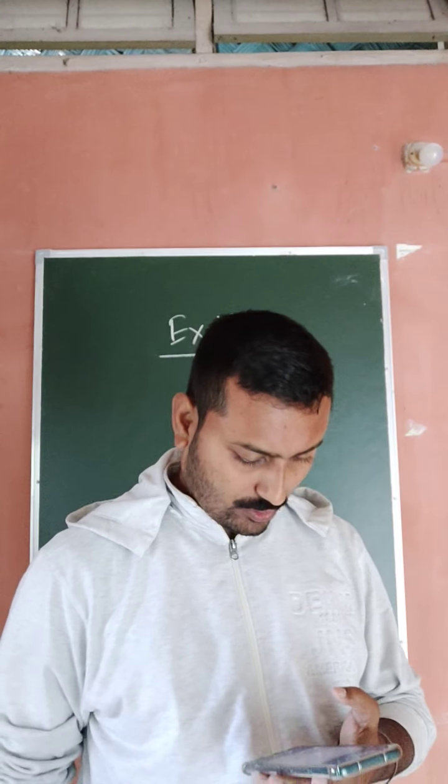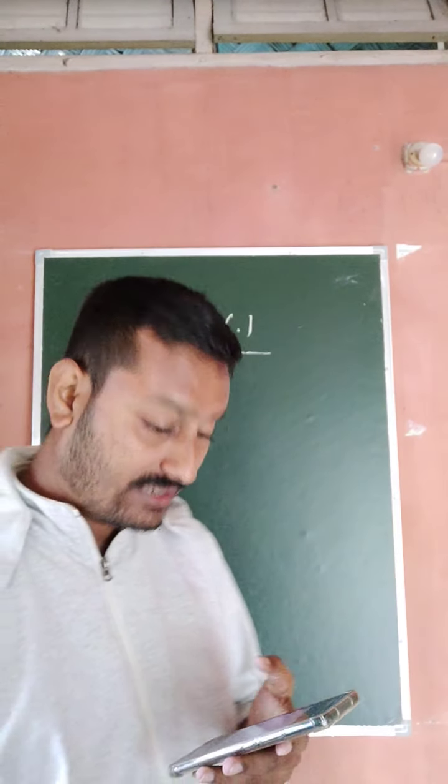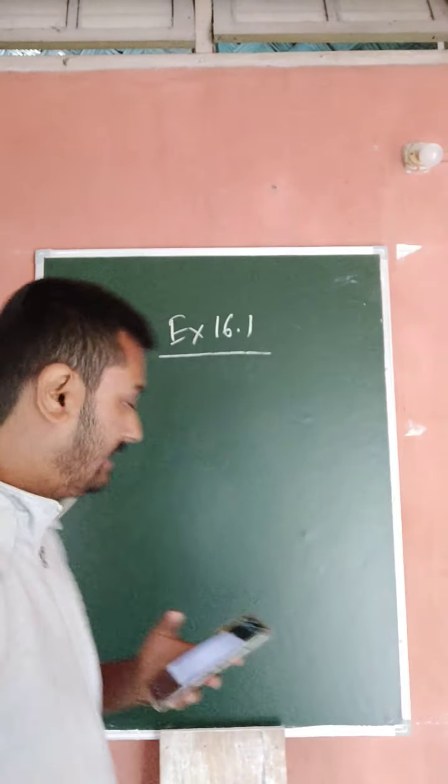Okay, so come to question number 2. Question number 2: the side of a square field is 175 cm. Find its area.